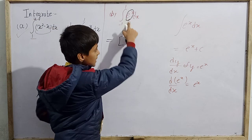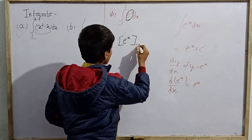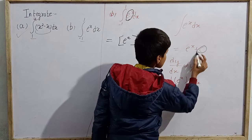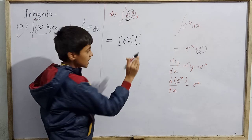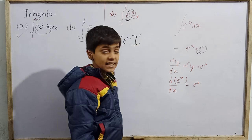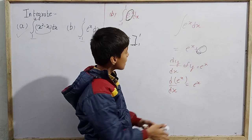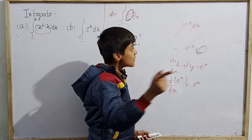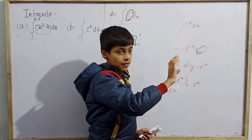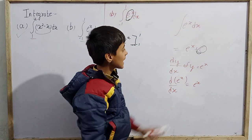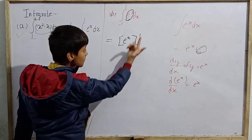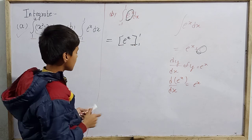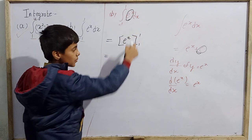We have already integrated it: e^x evaluated from -1 to 1. Since limits are given, we do not add c. The constant of integration is omitted here because we have lower limit -1 and upper limit 1.